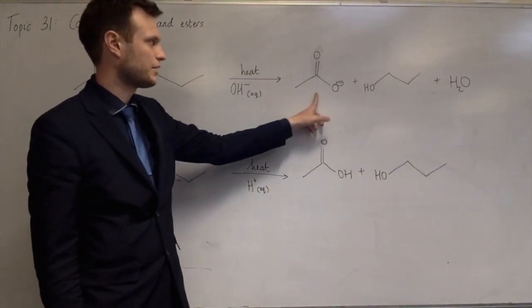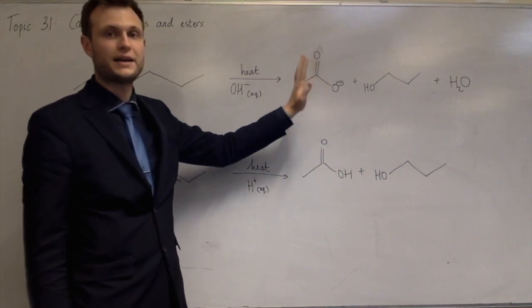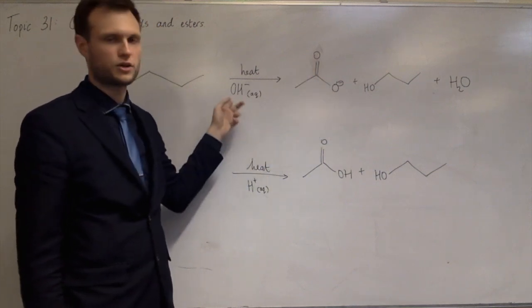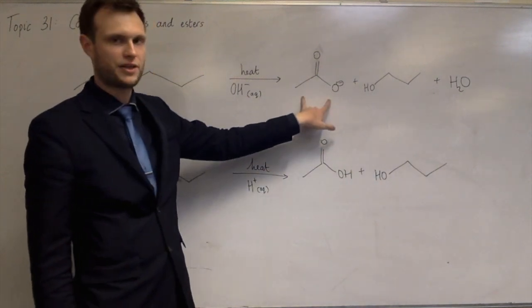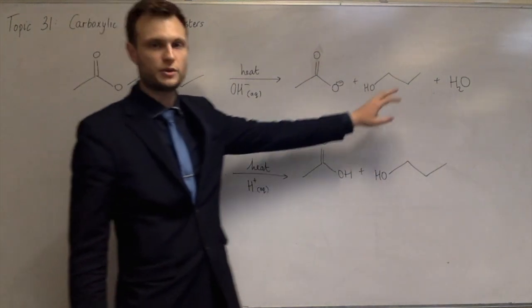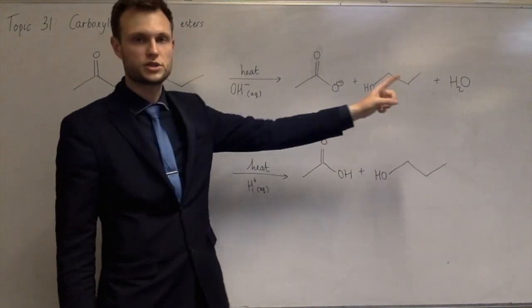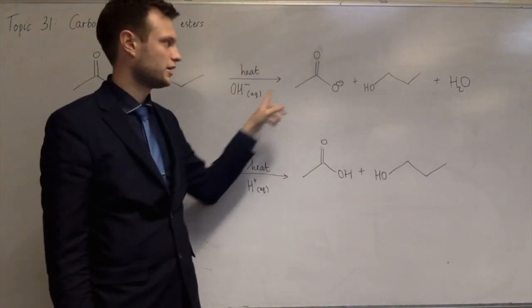If you do it with hot aqueous alkali, then you get a salt. So if this is just hydroxide, say it's sodium hydroxide, you get sodium ethanoate as a salt. You can still get the alcohol and the water that comes from the reaction between the alkali and the acid.